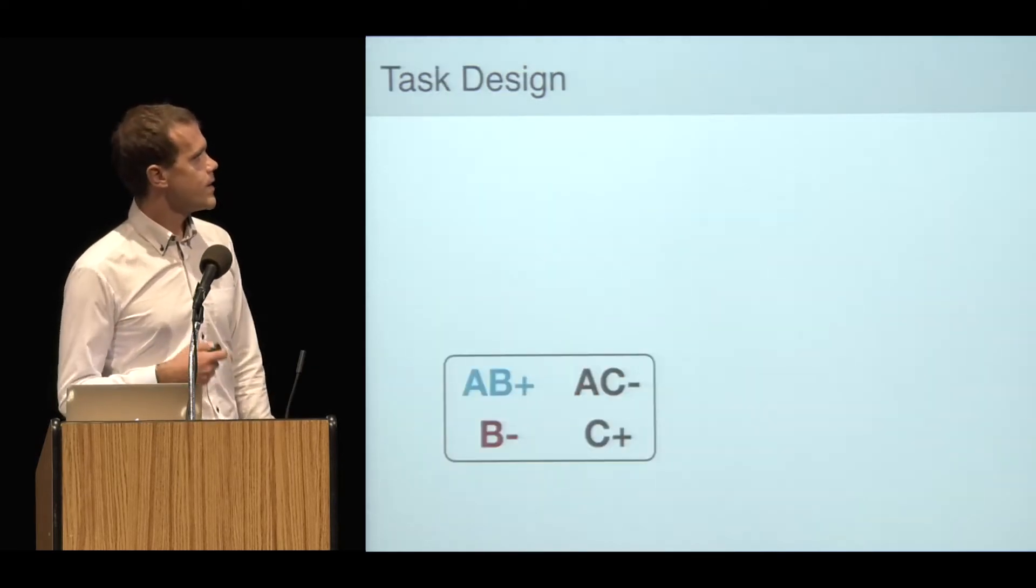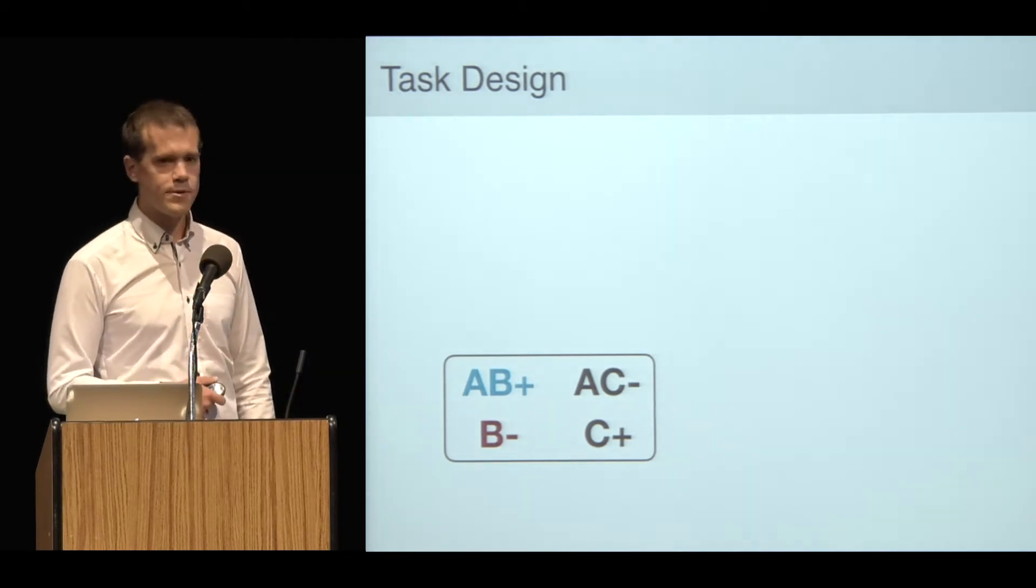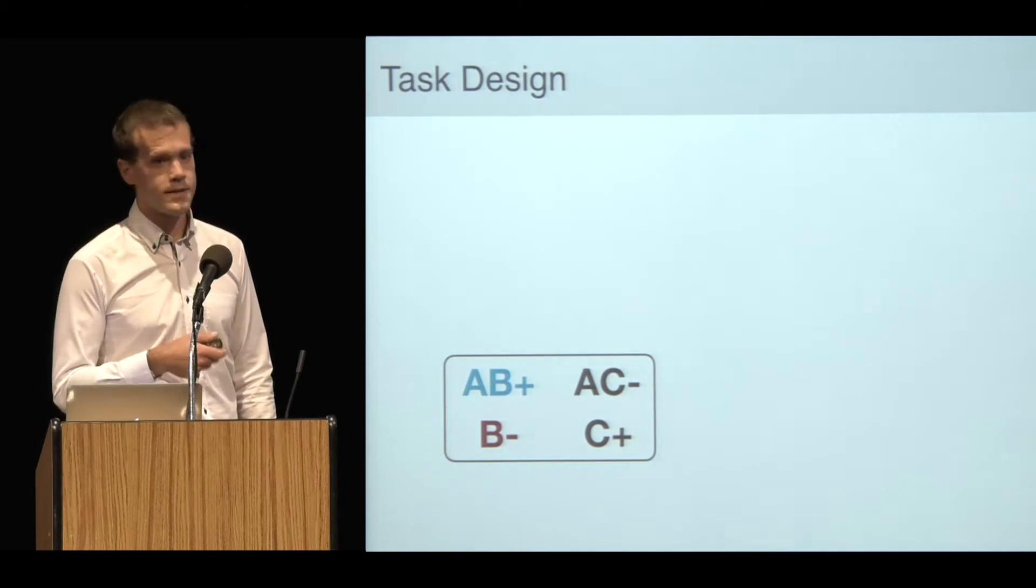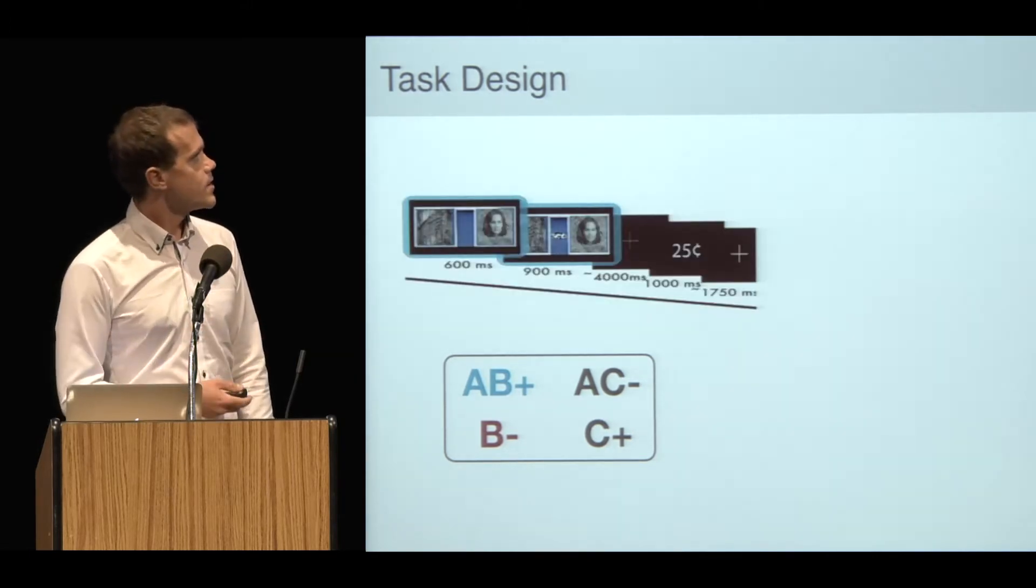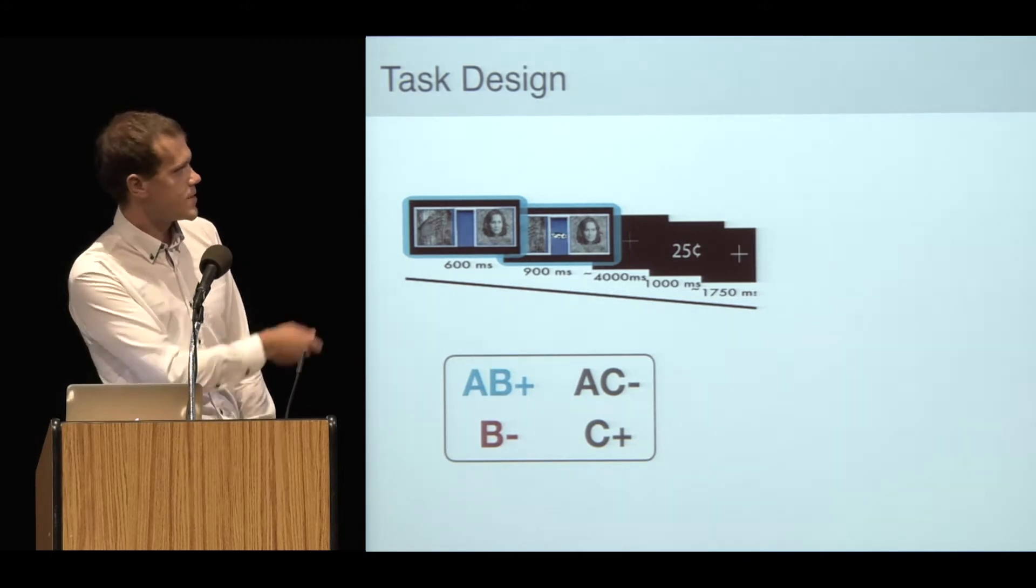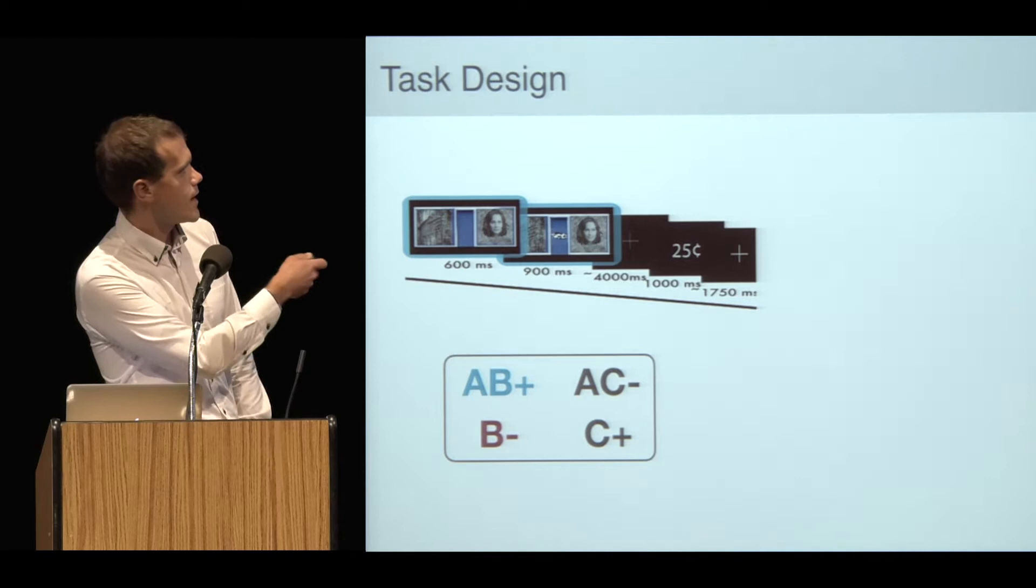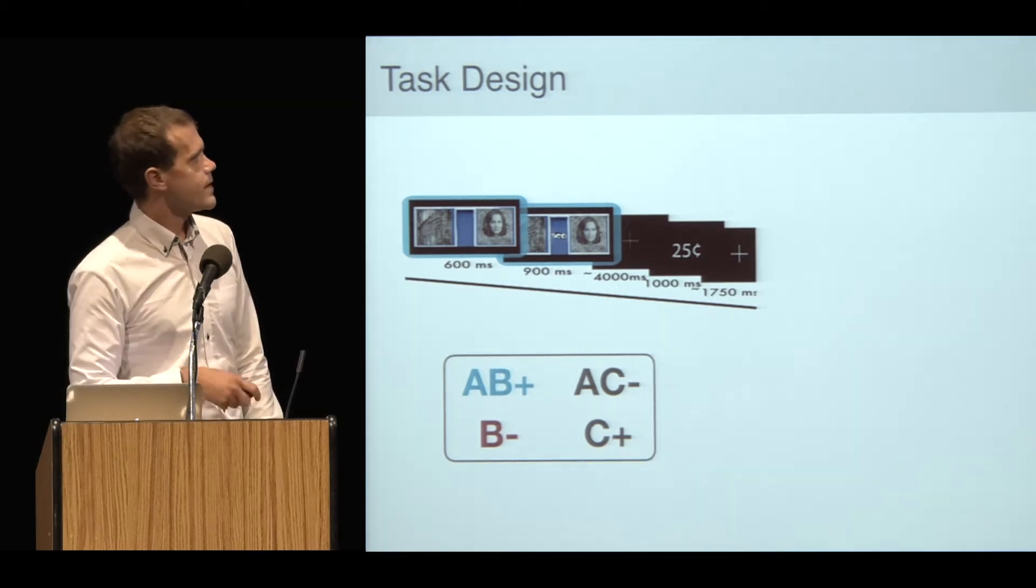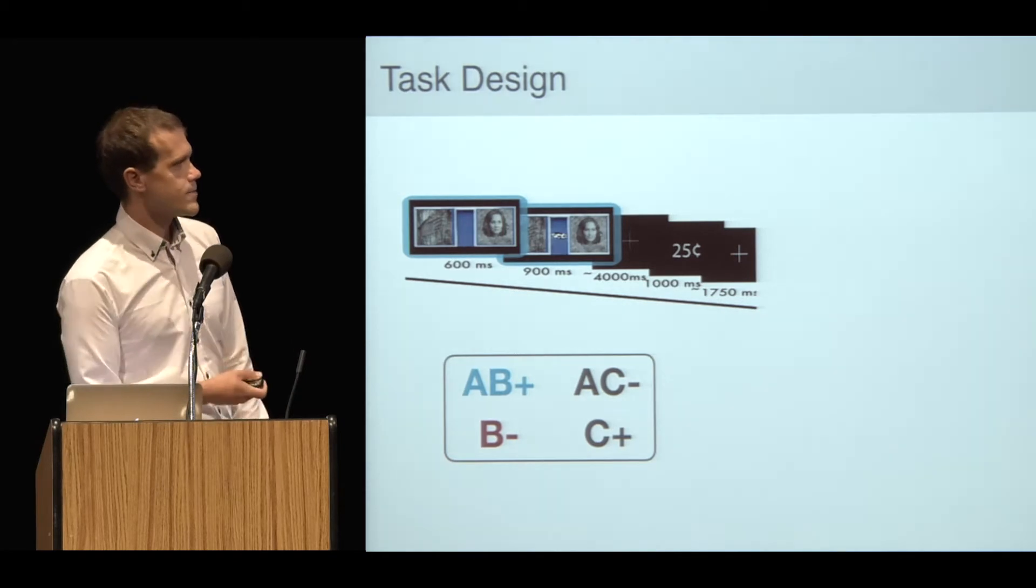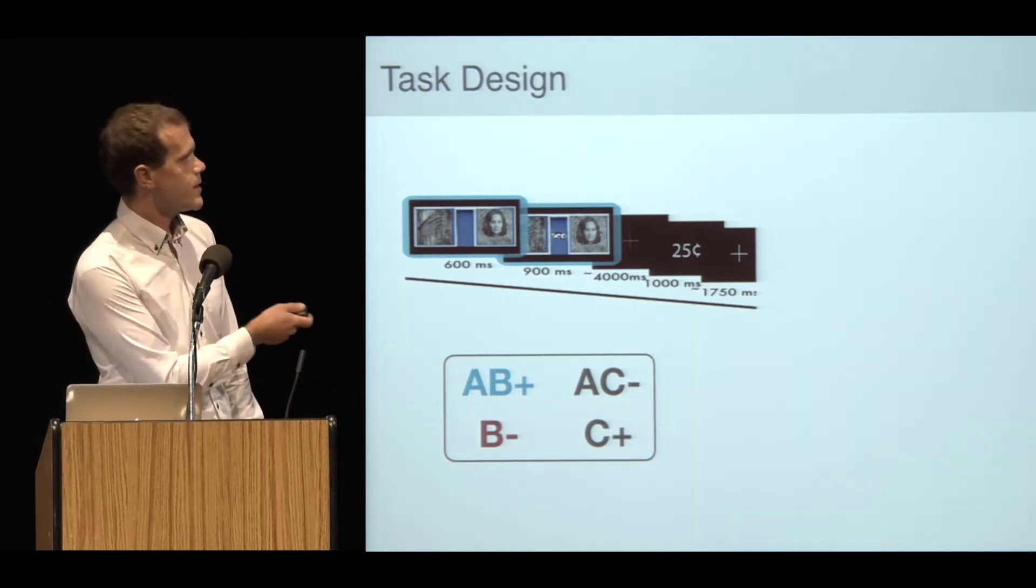The way that this is actually implemented is I embed this learning problem in a speeded target detection task. Here's an example of one trial. You see A and B, which are a hand and a face in this example. Then 600 milliseconds after they appear, a target appears, and the subjects have to respond quickly to this target. If they do it quickly enough, they get a reward.